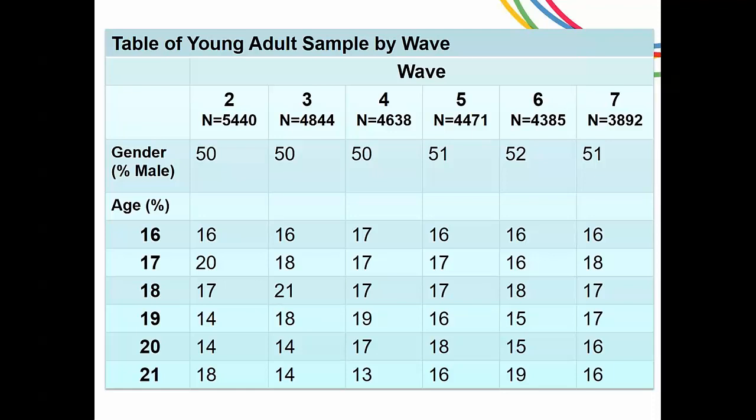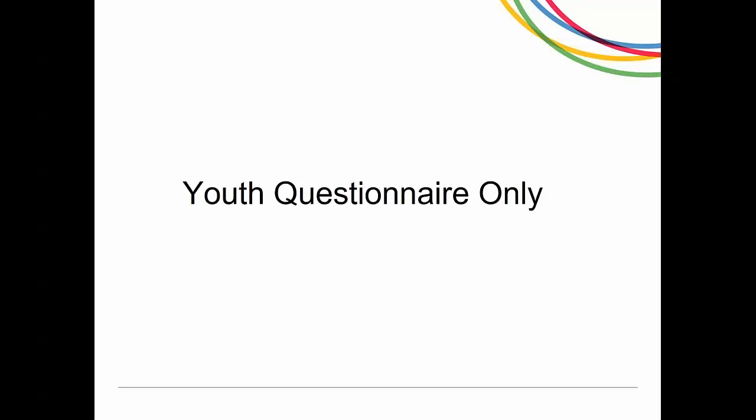Next, I'm going to talk about the youth questionnaire and questions that are only included in the youth questionnaire — not included in the young adults module. Next to the questions, I've put wave numbers indicating in which wave these questions are asked. If there are no wave numbers next to the question, that means they're asked at every wave. I've tried to place these into themes so you get an idea of the broad categories of questions asked.